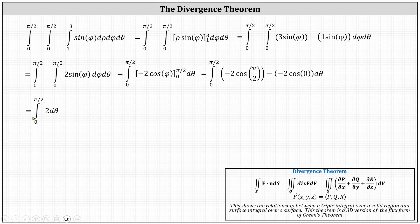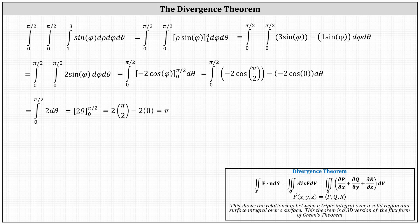We now have the integral from zero to pi divided by two of two d theta. Integrating two with respect to theta gives two theta. Evaluating from zero to pi over two: two times pi divided by two minus two times zero, which simplifies to pi. Pi is the flux of the vector field out of the region E.